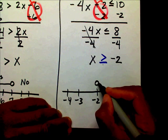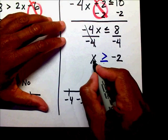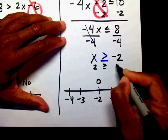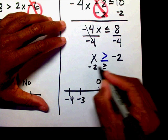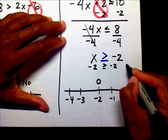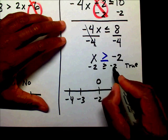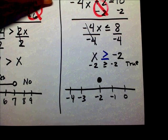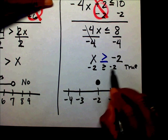If I were to put negative 2 into this inequality: is negative 2 greater than or equal to negative 2? Yes, this is true. So since this is true, I'm going to close my circle, because negative 2 is greater than or equal to negative 2.